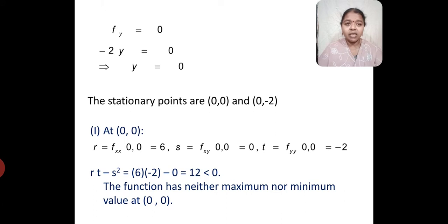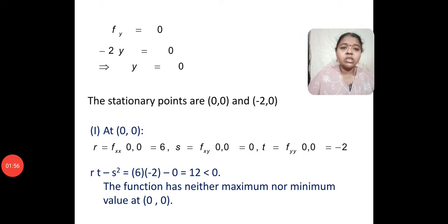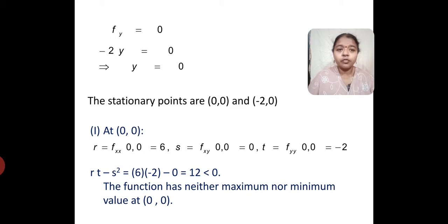Now let's consider fy equal to 0. We get minus 2y equal to 0, or y equal to 0. The stationary points are (0, 0) and (-2, 0). Now let's see what happens to the value of r, s, t at (0, 0). The value of r is 6, s is 0, and t is equal to minus 2.